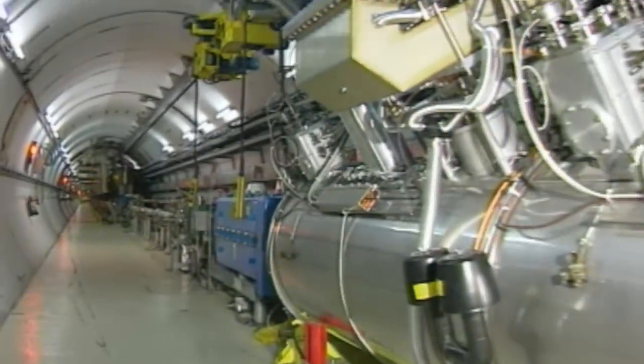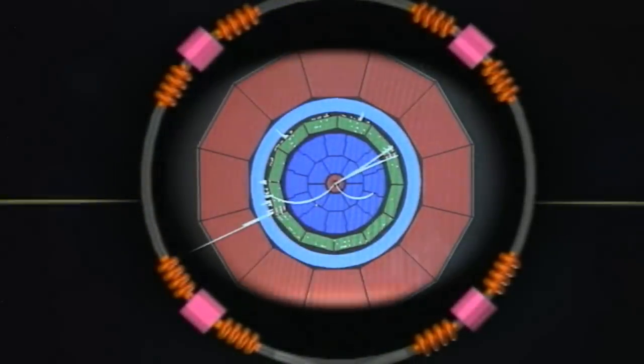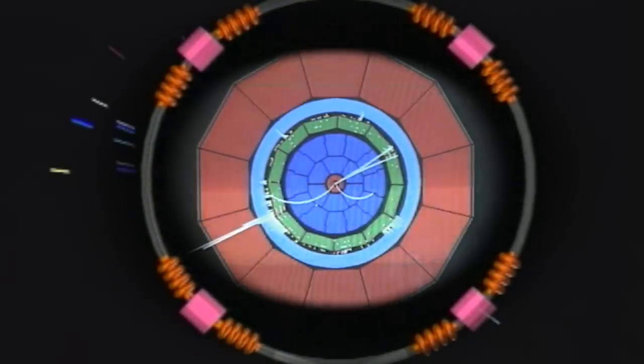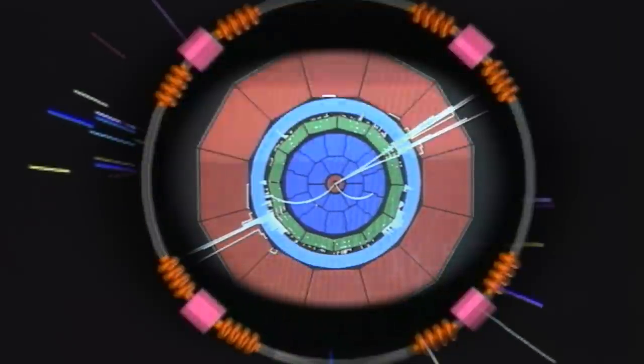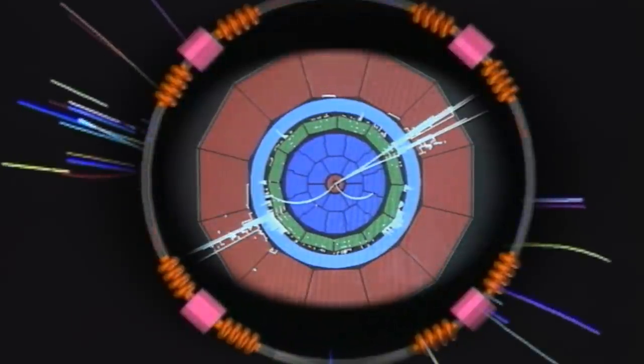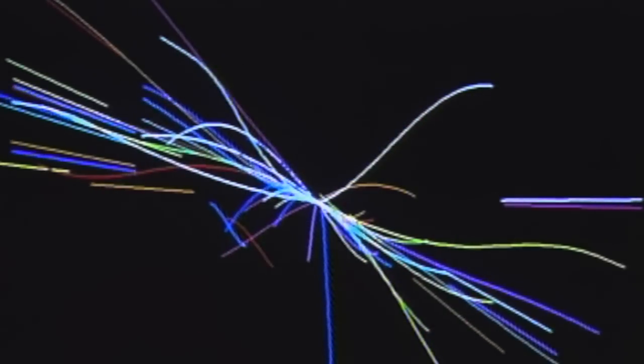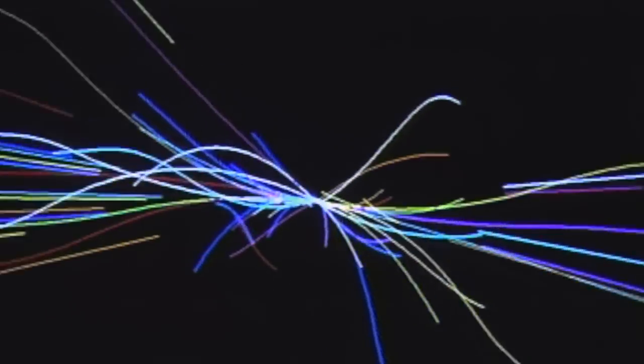The LEP collaborations soon had their first major result. By measuring the decays of Z bosons, they found that nature has three, and only three, families of matter particles. Everything we see in the universe is made of the lightest family.